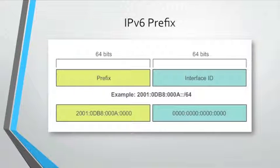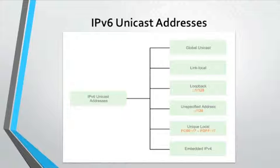The IPv6 prefix is used to represent the prefix portion of the address. IPv6 does not use the dotted decimal subnet mask notation; instead, the prefix length indicates the network portion of an IPv6 address using the format: IPv6 address/prefix length. The prefix length can range from 0 to 128. A typical IPv6 prefix length for LANs and most other network types is /64, meaning the network portion is 64 bits in length, leaving another 64 bits for the interface ID or host portion. A global unicast address is similar to a public IPv4 address — globally unique and internet-routable — and can be configured statically or assigned dynamically.